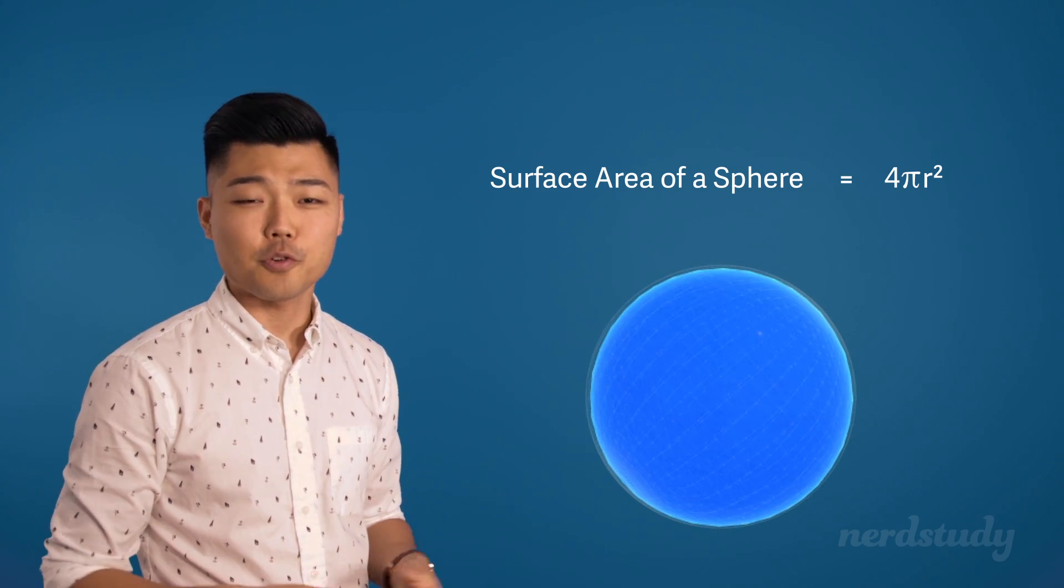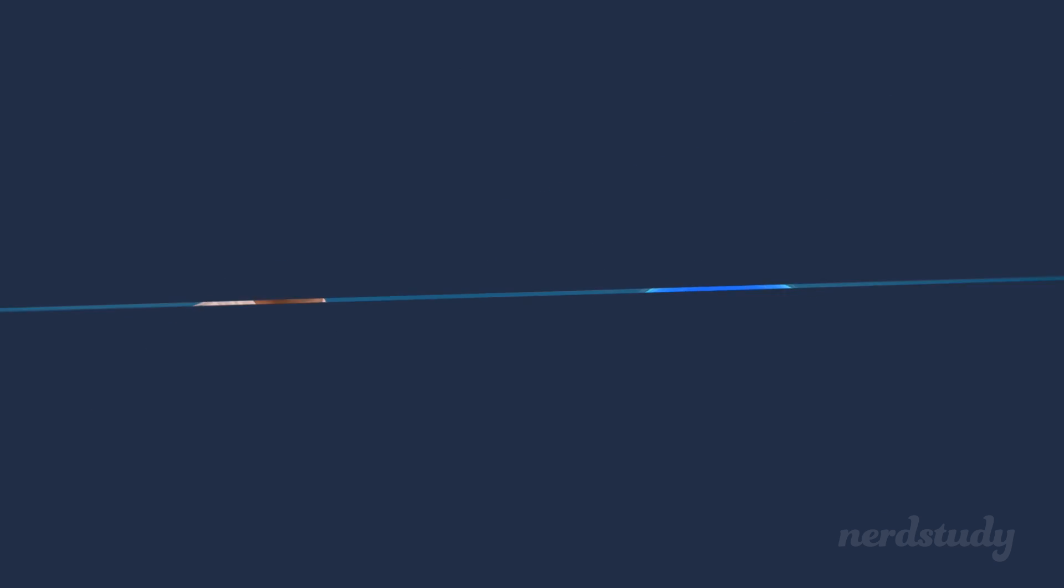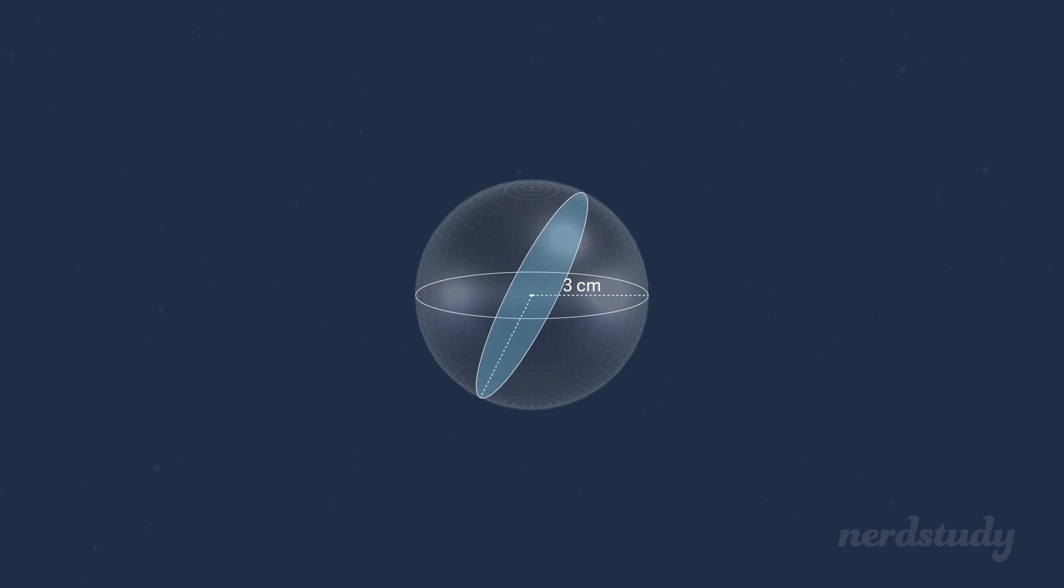So let's try an example together. Here's a sphere, and as you can see the radius of the circle within the sphere is three centimeters. And since it's a perfect sphere, you can take any circle as long as it crosses through the middle of the sphere itself. And rest assured, you would have three centimeters as your radius.